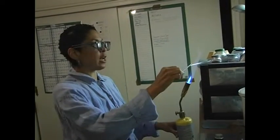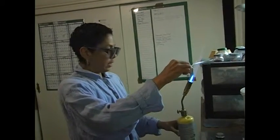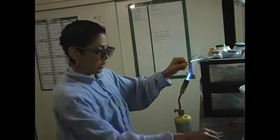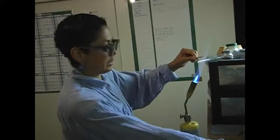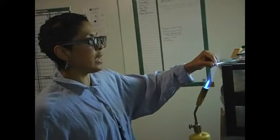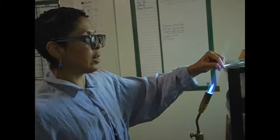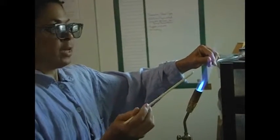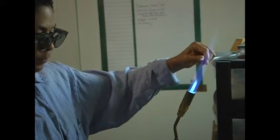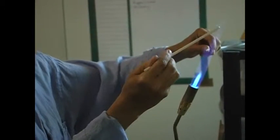First thing I have to do is heat up my mandrel. It has to be hot enough to accept the glass. So I heat this up, it's going to get red at a certain point, and at the same time I'm going to start heating up the glass.